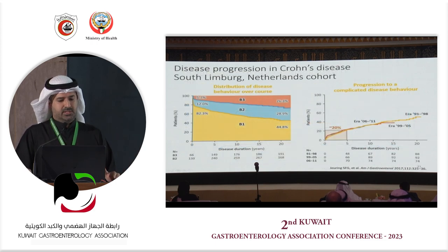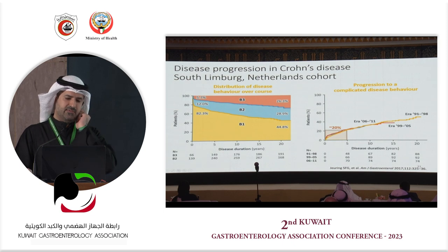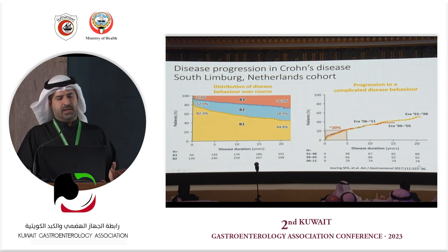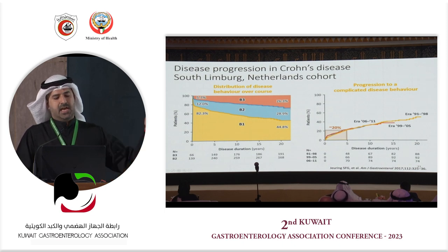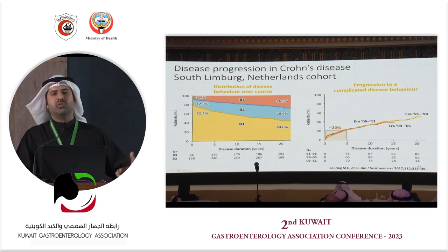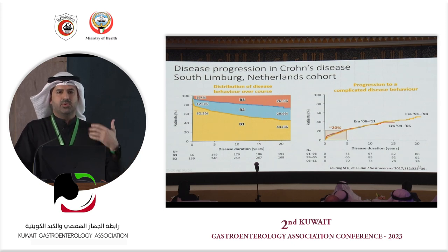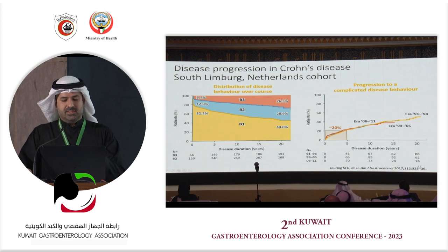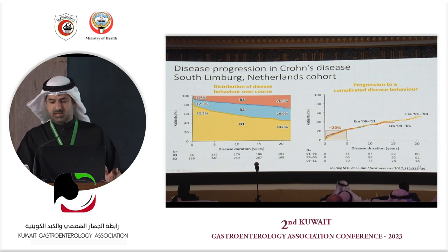Looking at disease progression in Crohn's disease using a Dutch cohort: based on the Montreal classification, the desired B1 inflammatory phase decreases over time if patients are untreated, with increasing B2 (fibrostenotic) and B3 (penetrating) disease that is resistant to medical therapies. As early as five years, complex disease develops if left untreated.